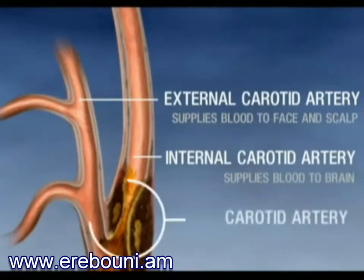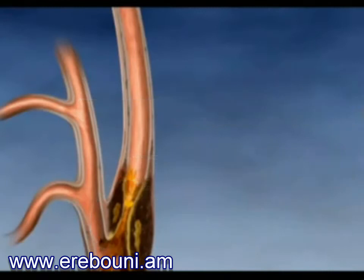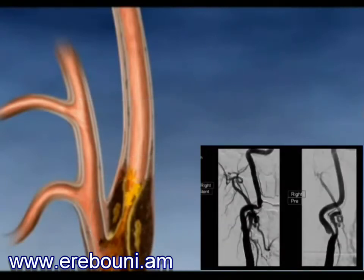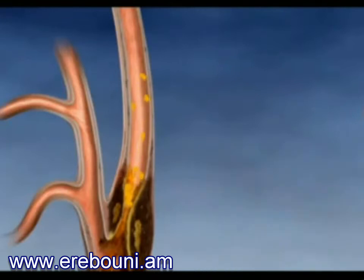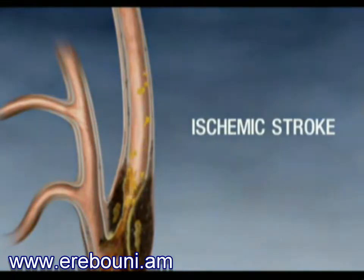Buildup of plaque in this artery is called carotid artery disease. In some cases, clots may form on the plaque as well. If a piece of this plaque or clot breaks off or embolizes, it can enter the blood vessels in the brain. The result is often ischemic stroke, which can cause brain damage leading to serious disability or death.